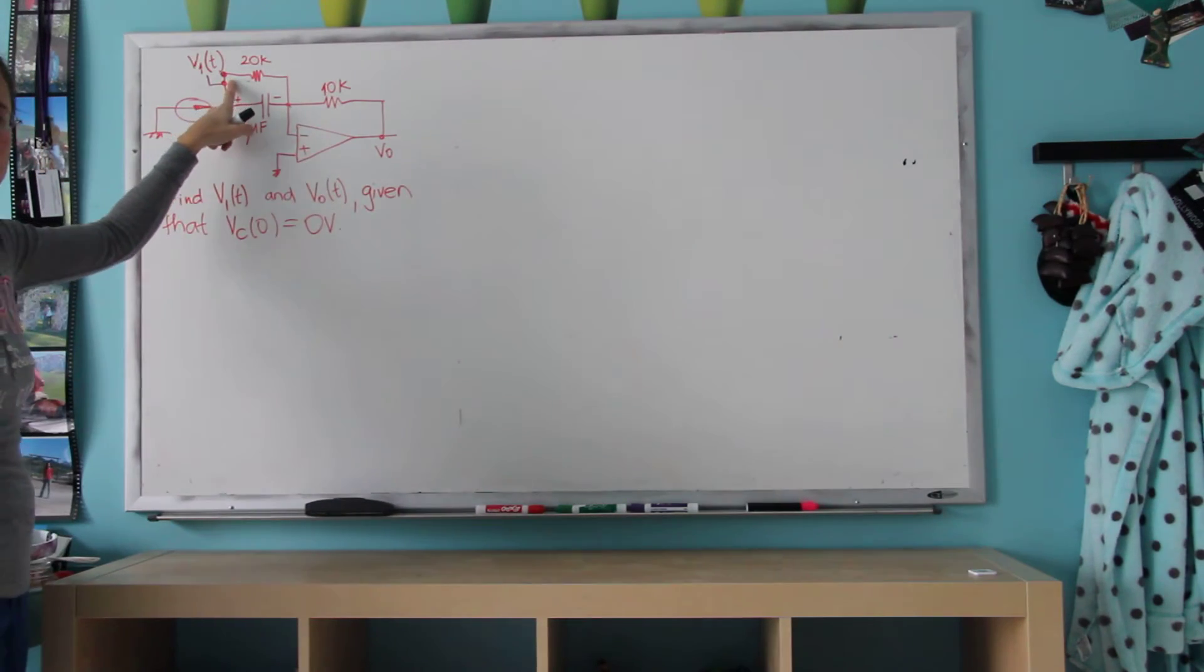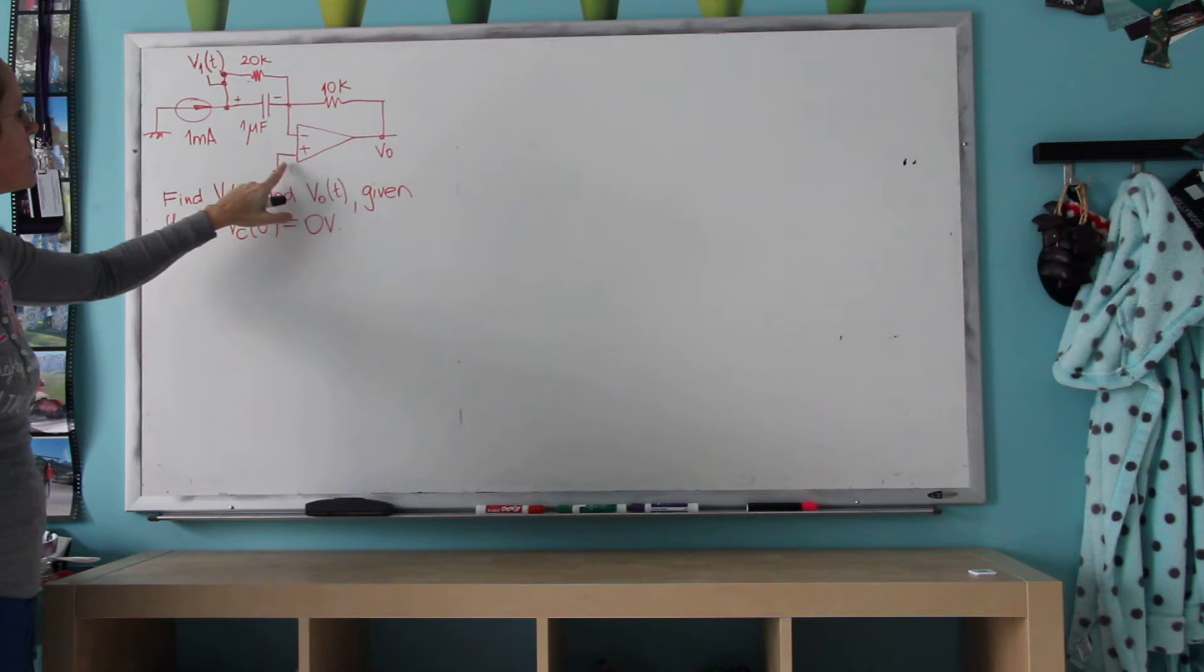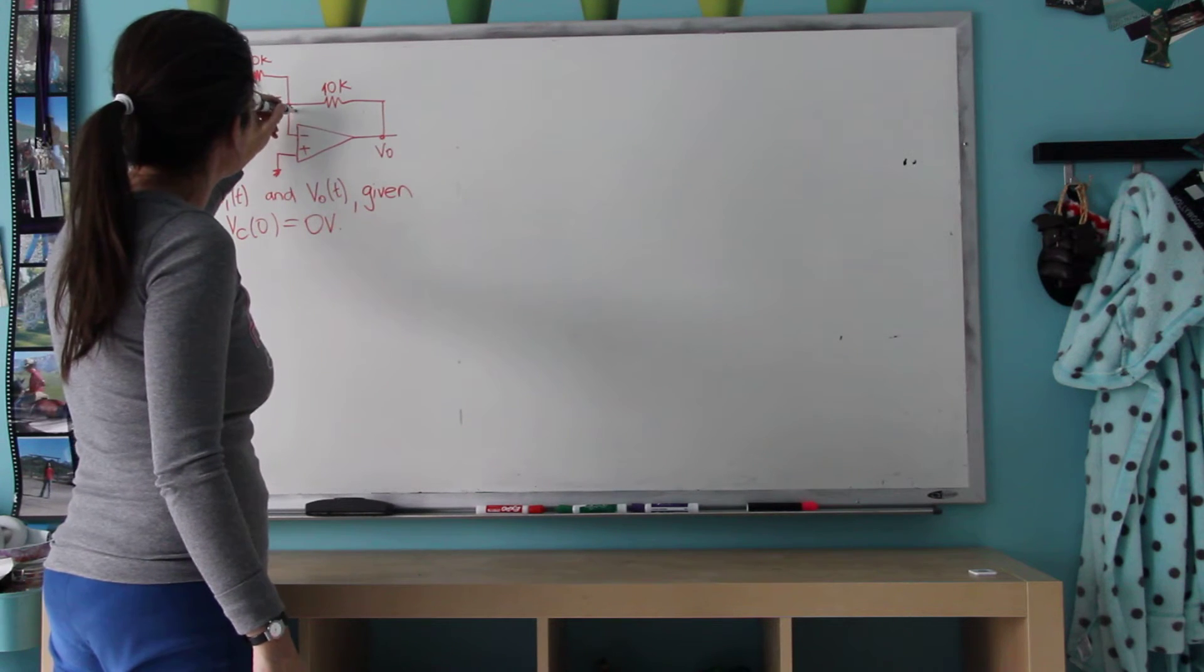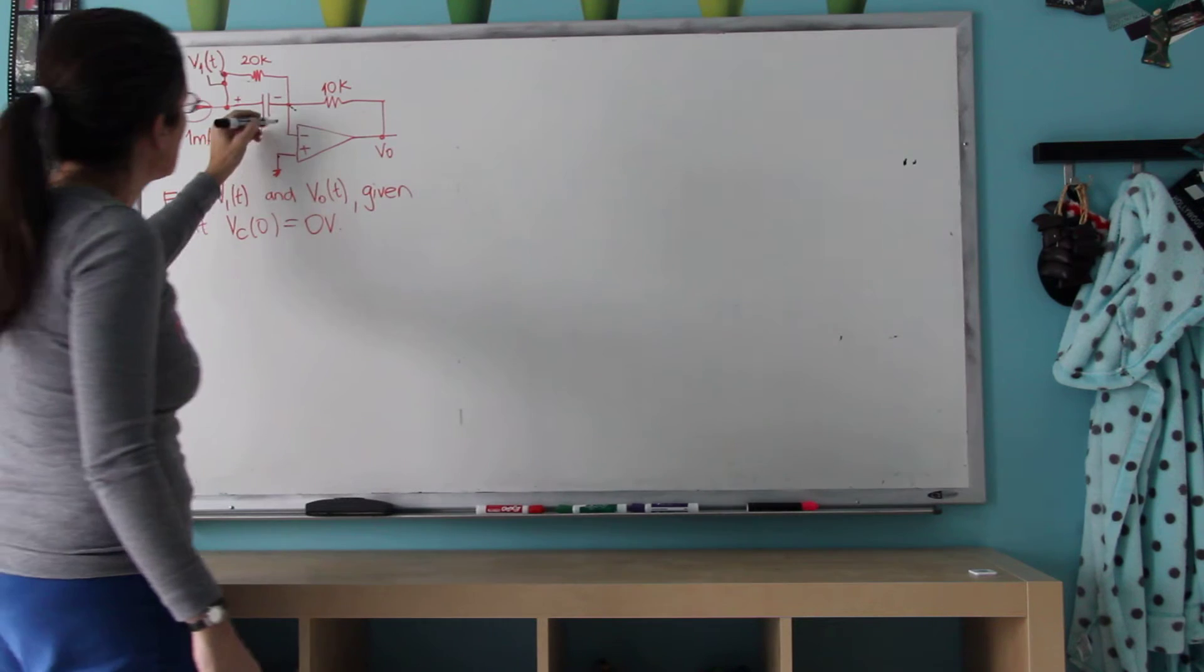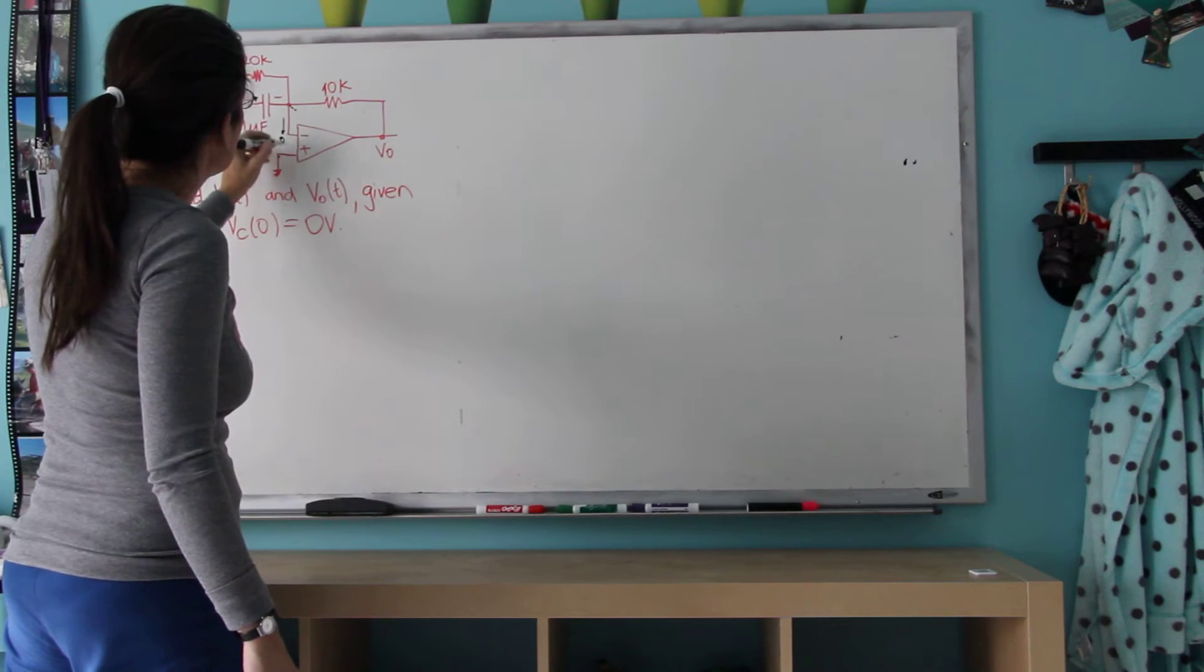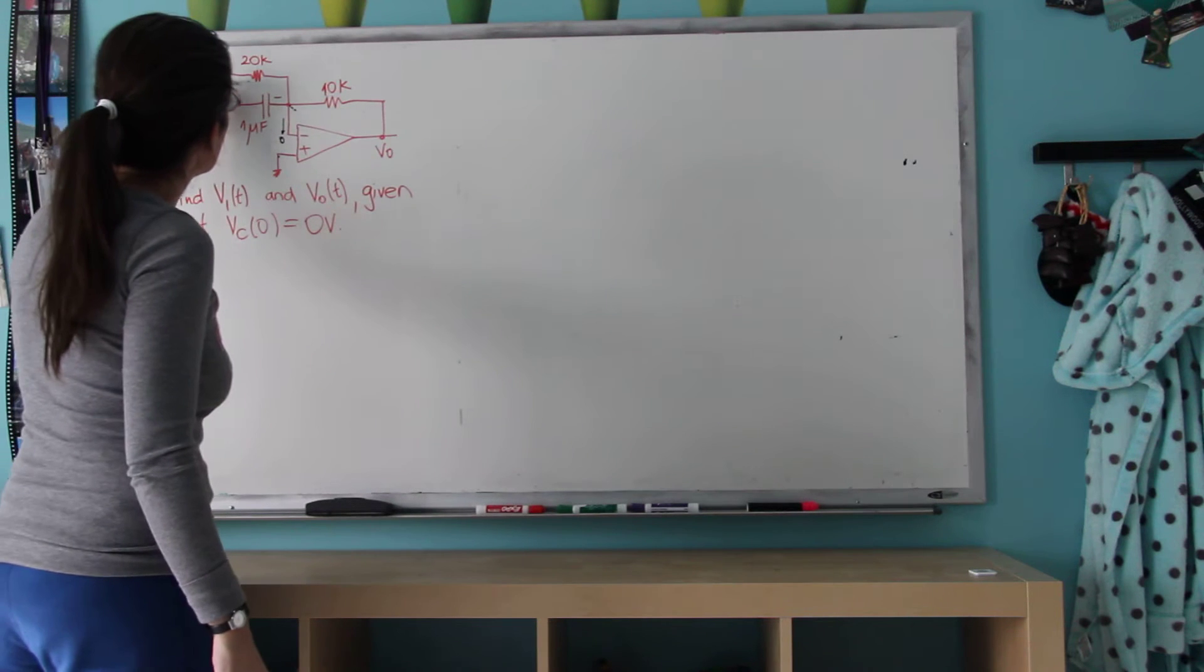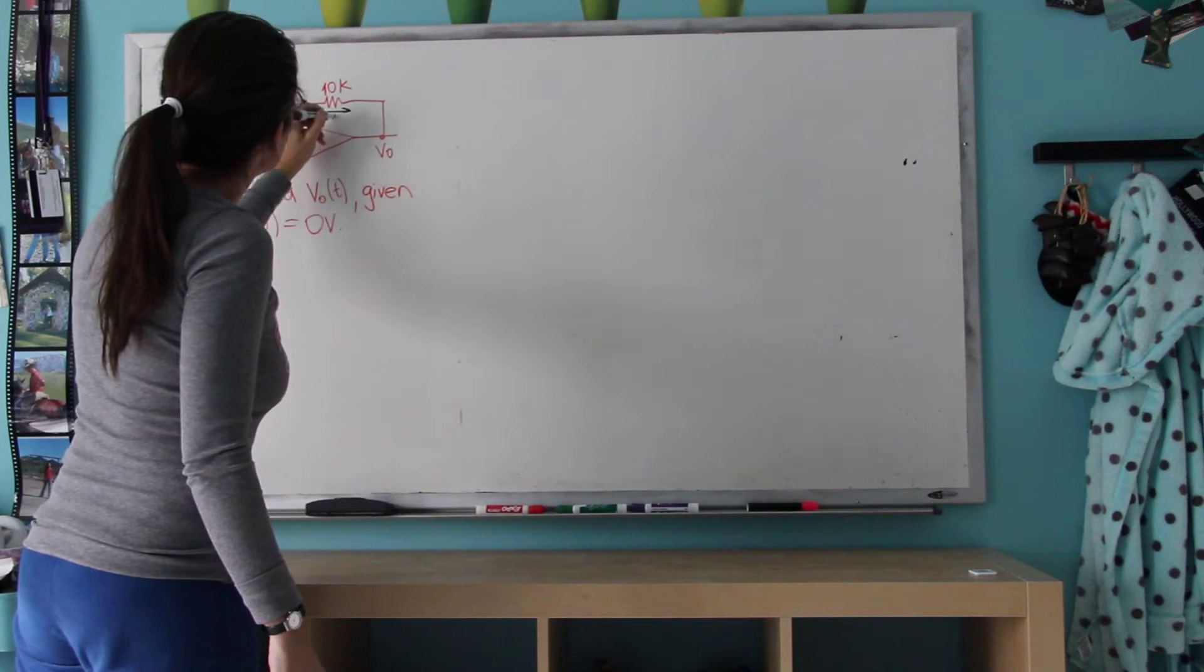So I need to find this voltage here, which turns out to be the voltage across the capacitor because of this ground imposed by the op amp. Also, the current here is zero, so this current splits into these two, the 1 milliamp splits into these two, and then comes back as 1 milliamp.